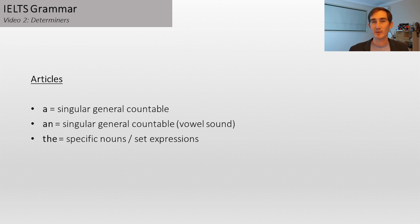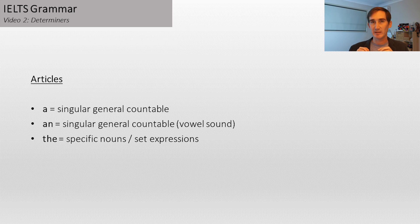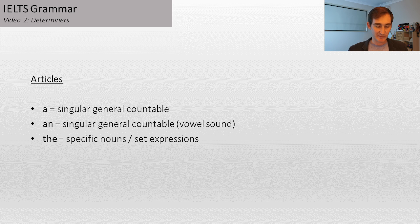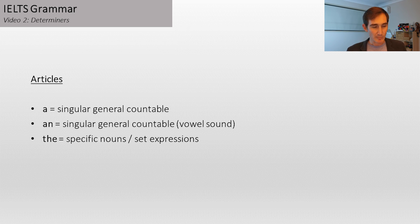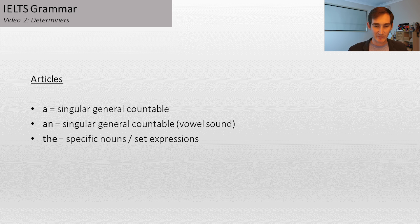Articles, as you probably know, are the words a, an, and the. The basic idea of 'a' is it goes with singular, general, countable nouns. Singular is just one thing — it comes from the word 'single,' so a one individual noun. Plural means more than one. And uncountable refers to things you can't count — that was explained in the previous video. So 'a' or 'an' go with singular general countables, and with vowel sounds after them.